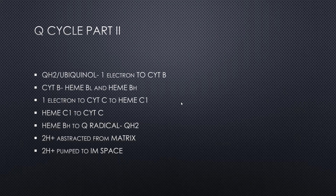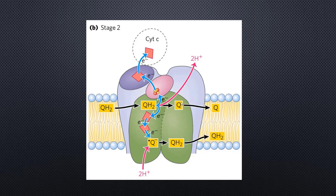The other electron from ubiquinol travels to cytochrome C1, via heme C1, and then eventually to the cytochrome C molecule. When it traverses to cytochrome C, a fresh cytochrome C molecule is generated in its completely reduced state. That reduced cytochrome C molecule then travels from complex 3 to complex 4. Cytochrome C also contains copper atoms, and those specificities will be explained in the next video covering cytochrome C oxidase, or complex 4.